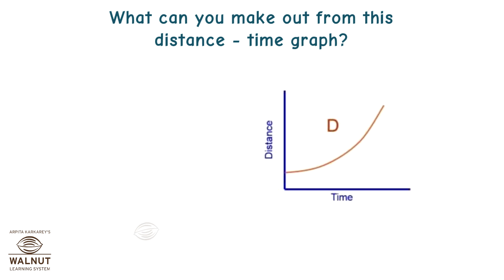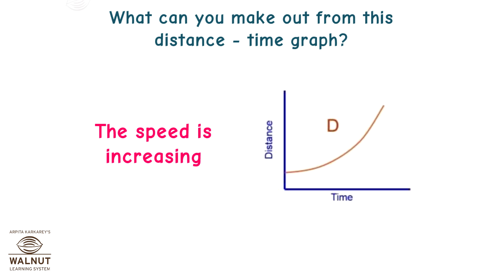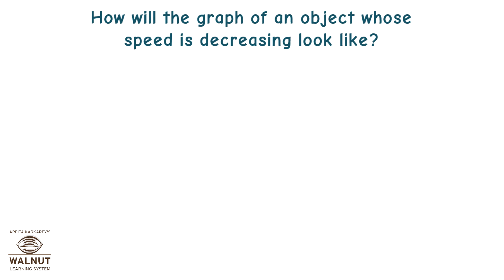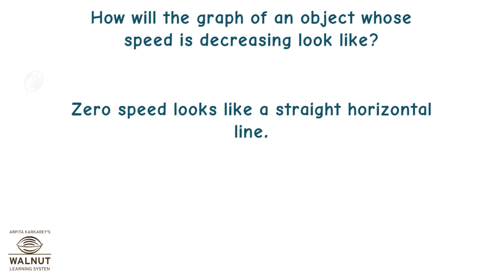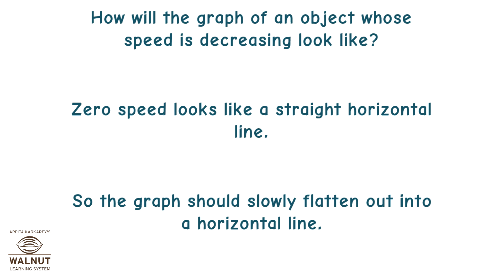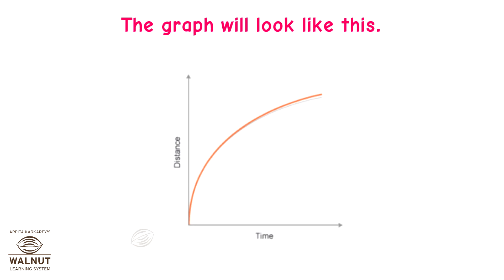What can you make out of this distance-time graph? The speed is increasing. How will the graph of an object whose speed is decreasing look? Zero speed looks like a straight horizontal line, so the graph should slowly flatten out into a horizontal line. The graph will look like this.